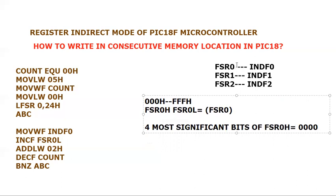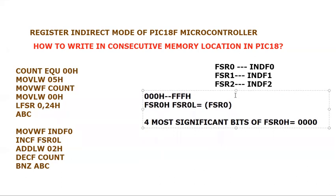Each FSR register is also connected with another register called the indirect file register. This is an important register used only in register indirect mode. There are three FSR registers, so there are three indirect file registers: for FSR0 there is INDF0, for FSR1 there is INDF1, and for FSR2 there is INDF2. These three register pairs are associated with each other.